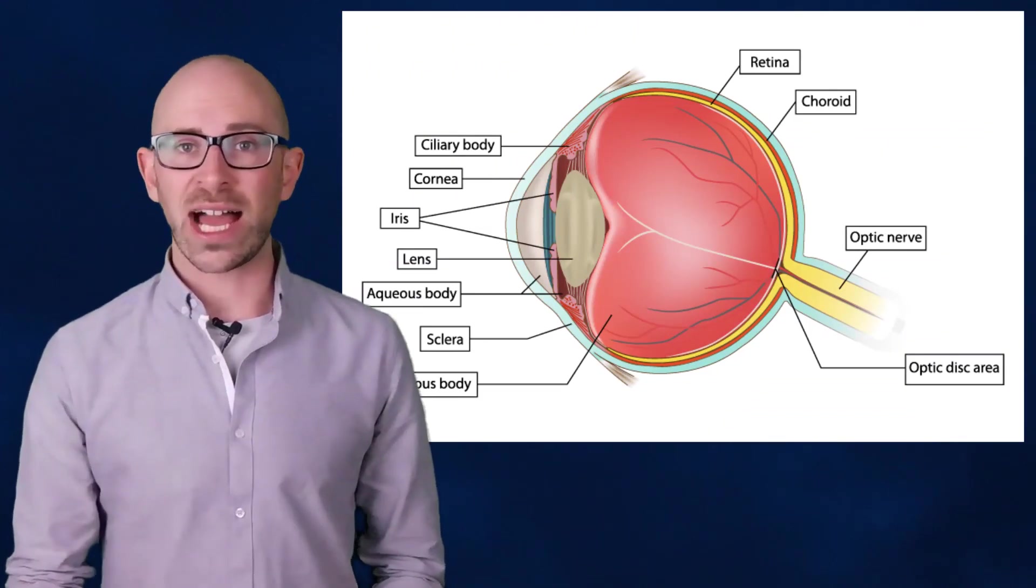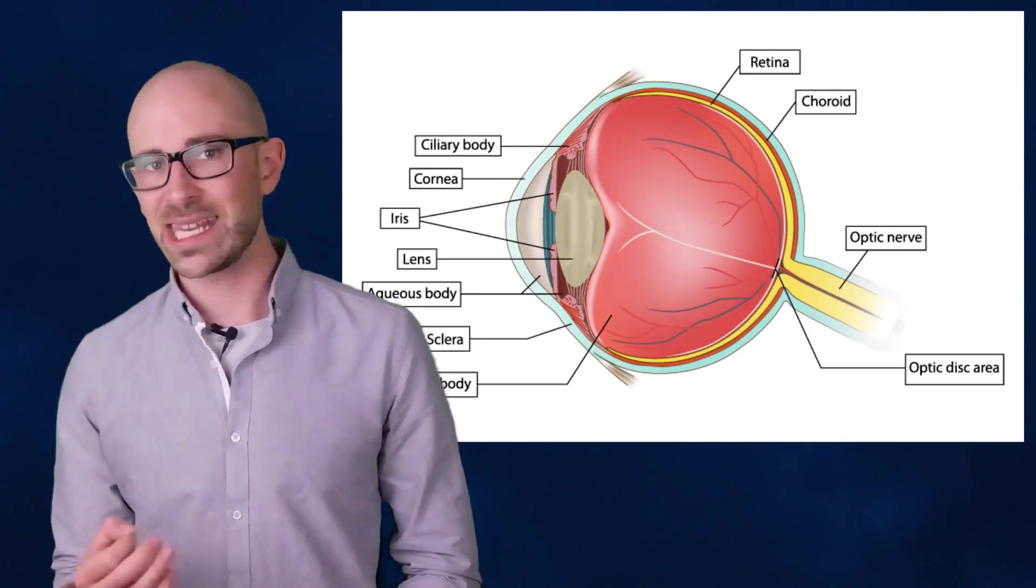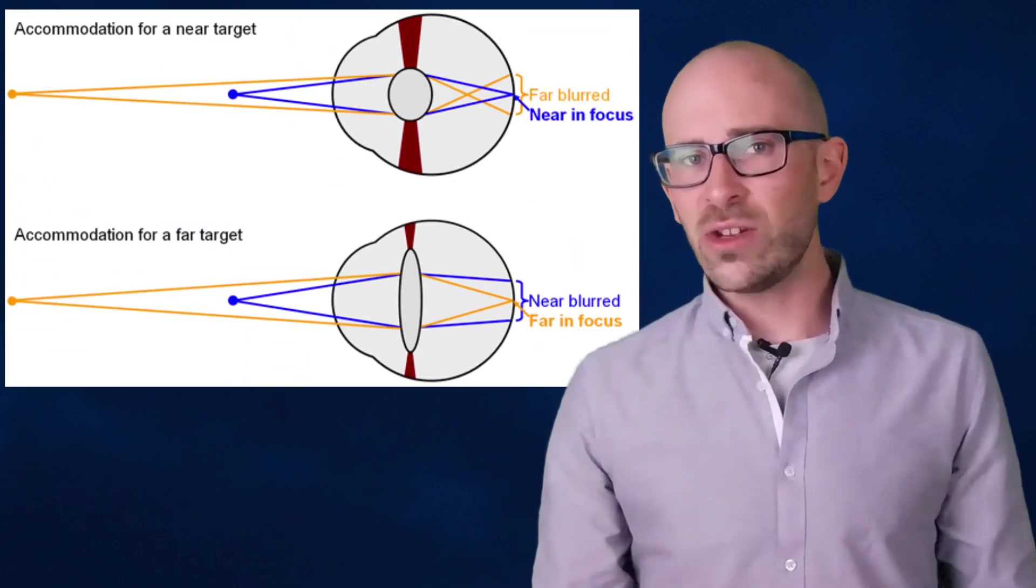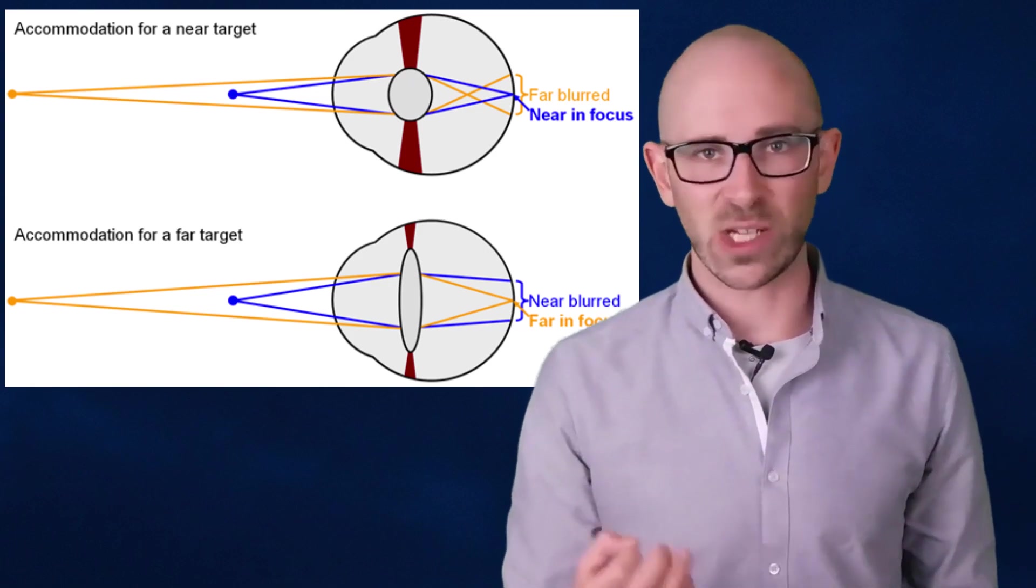This is because the lens in your eye slowly loses its focusing ability with age. In order to focus on things near you, your lens has to change from a flat to a more spherical shape and it loses the ability to do this as you get older.